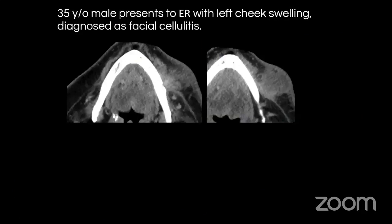The first patient is an adult presenting to the emergency department with left cheek swelling, diagnosed as facial cellulitis. You can see the abnormal soft tissue in the left cheek involving the skin, subcutaneous layer, and deep fascial compartments including the facial muscles — possibly the buccinator. When you look carefully at other levels, you'll be able to see the collection. Remember: collections are not always hypodense or fluid-like — they can be turbid with pus and look similar to adjacent soft tissues.